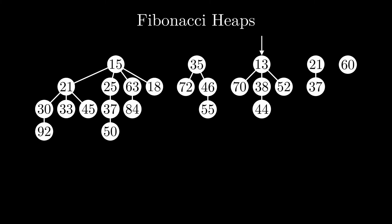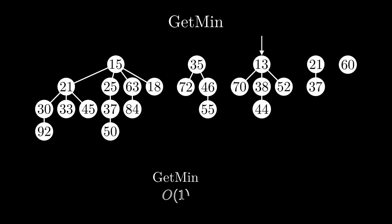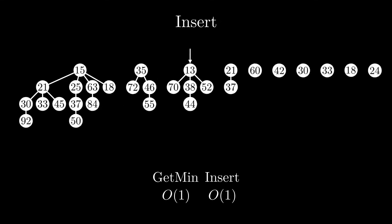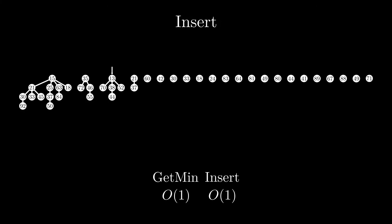Let's start implementing some actual Fibonacci heap operations. Implementing getMin is trivial, since we store a reference to the minimum element. For insert, remember we want to be lazy — the simplest thing we can do is just add a new tree consisting of a single node to our root list, and update the minimum if the new element is smaller. We just implemented insert in constant time. But you might already spot a problem: we want to keep the number of trees low, but adding a new tree for every element is basically the opposite.